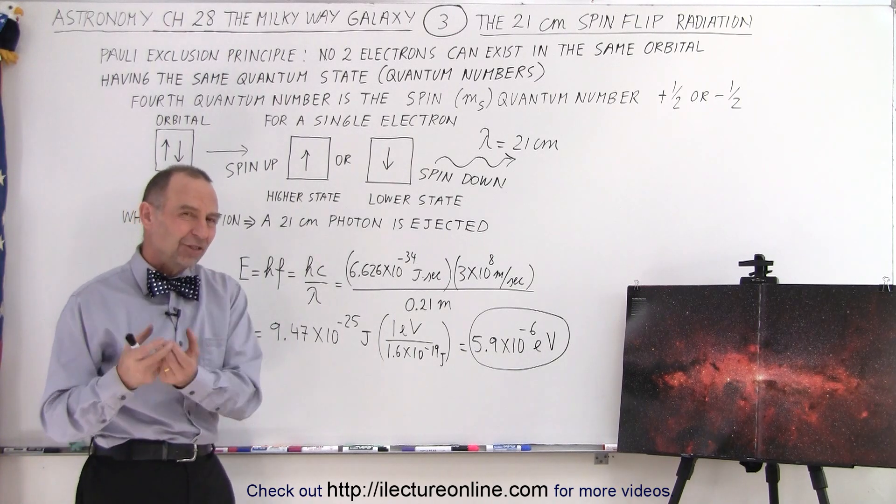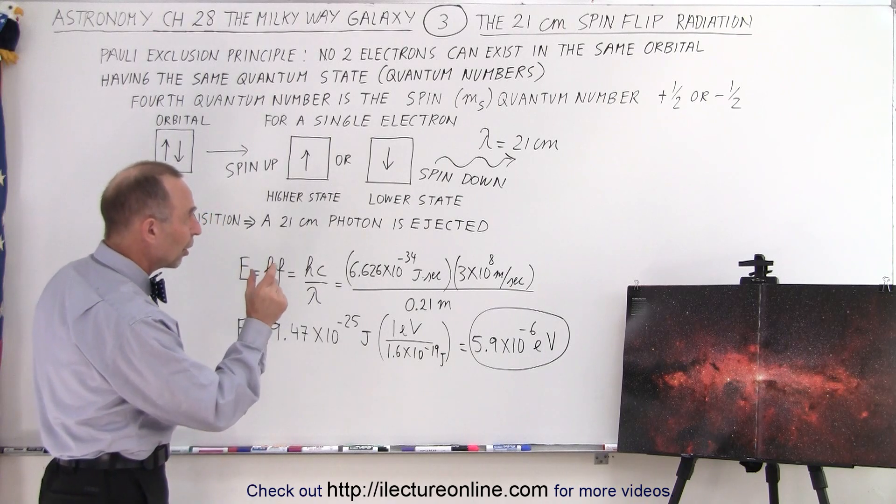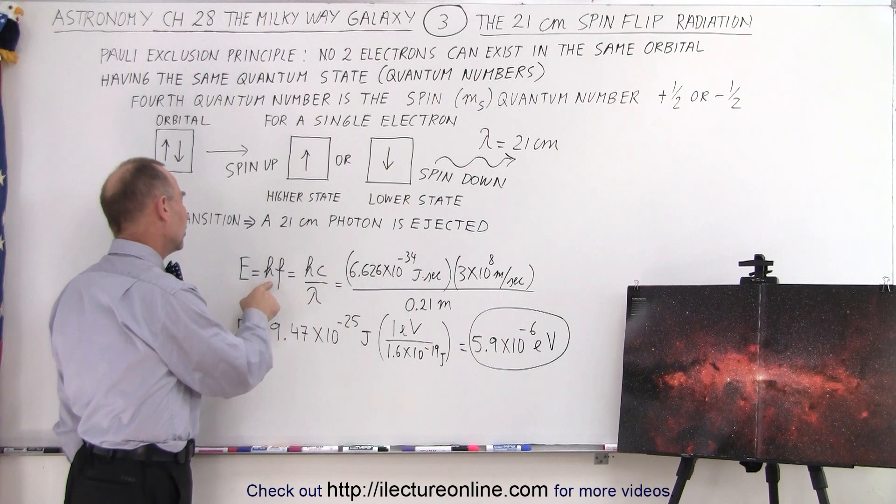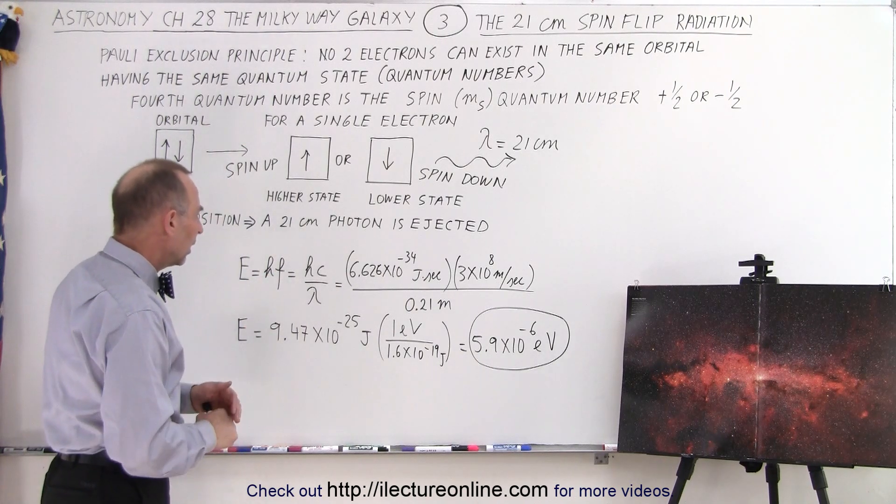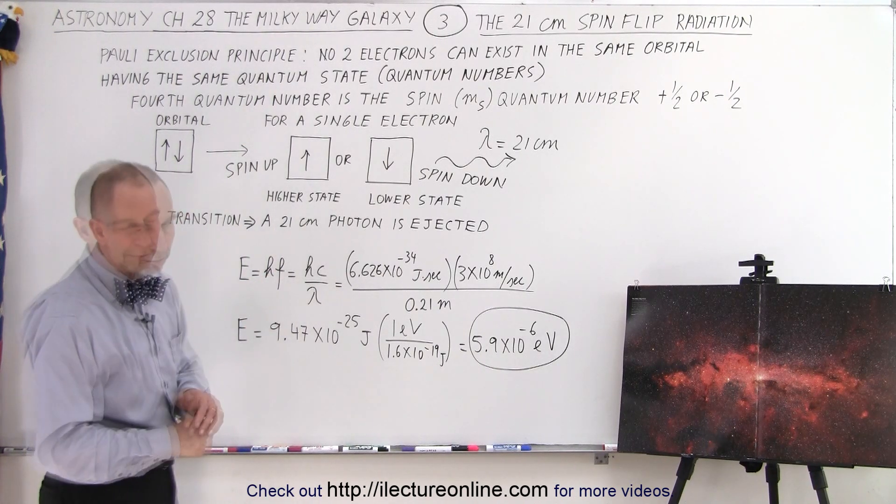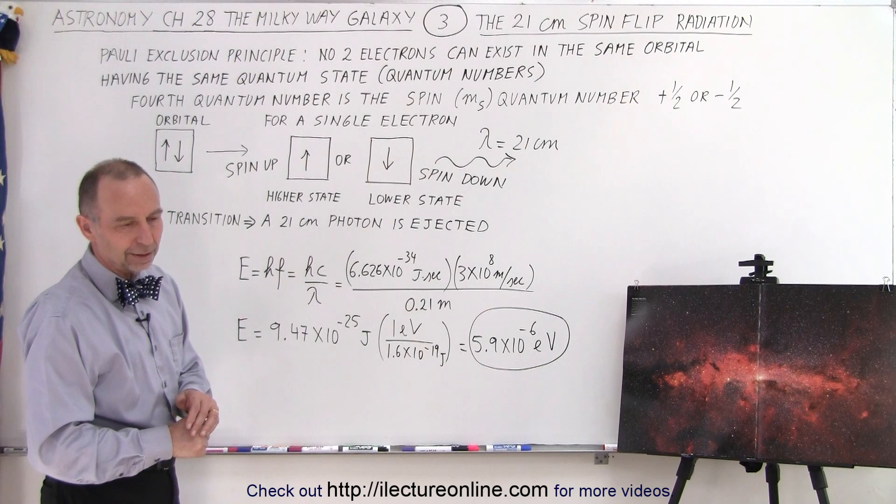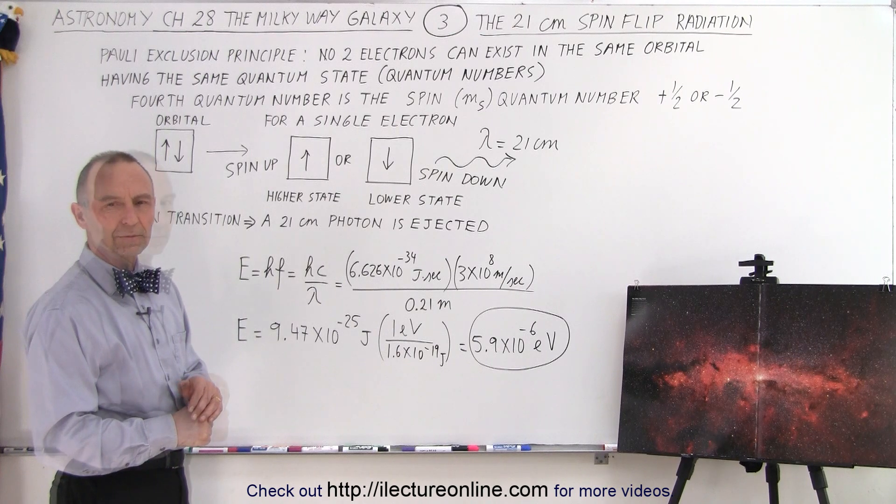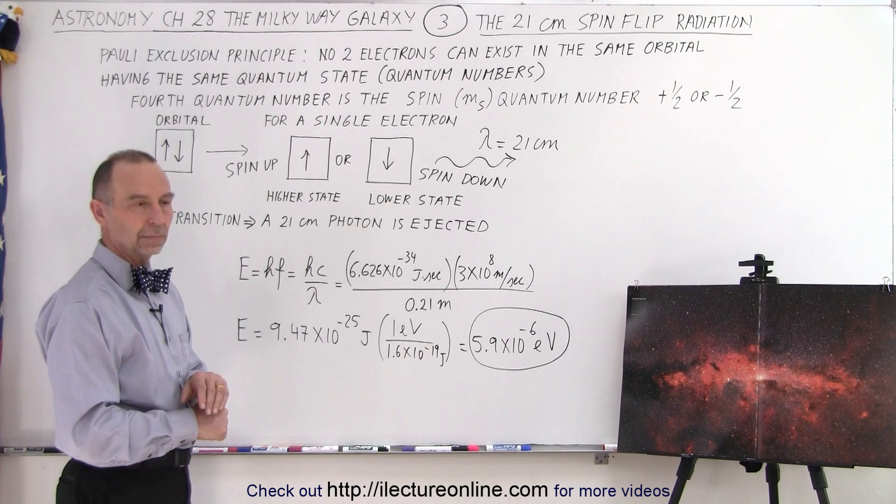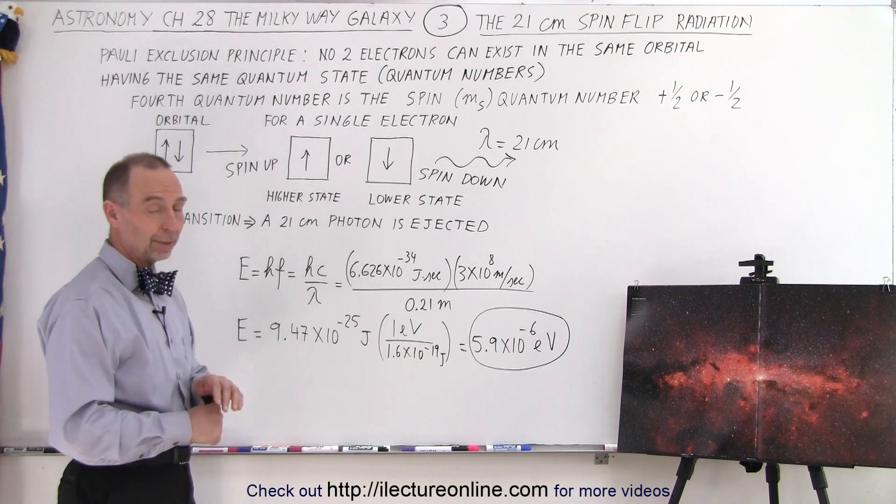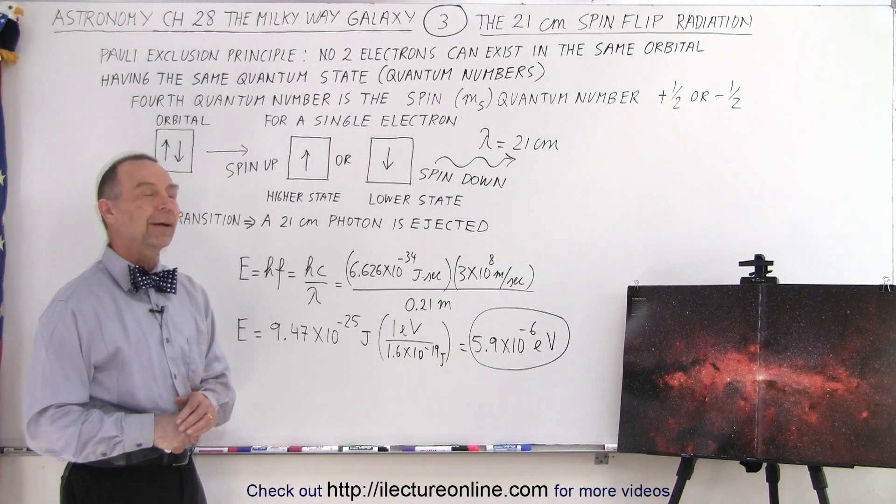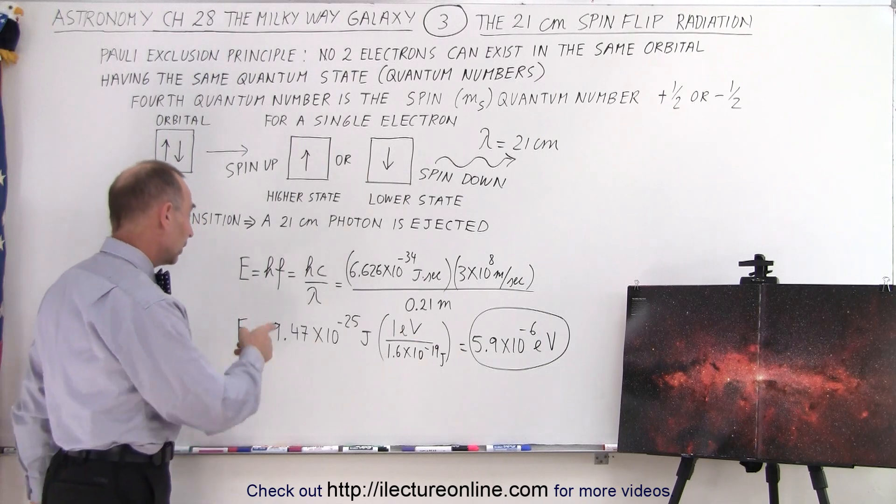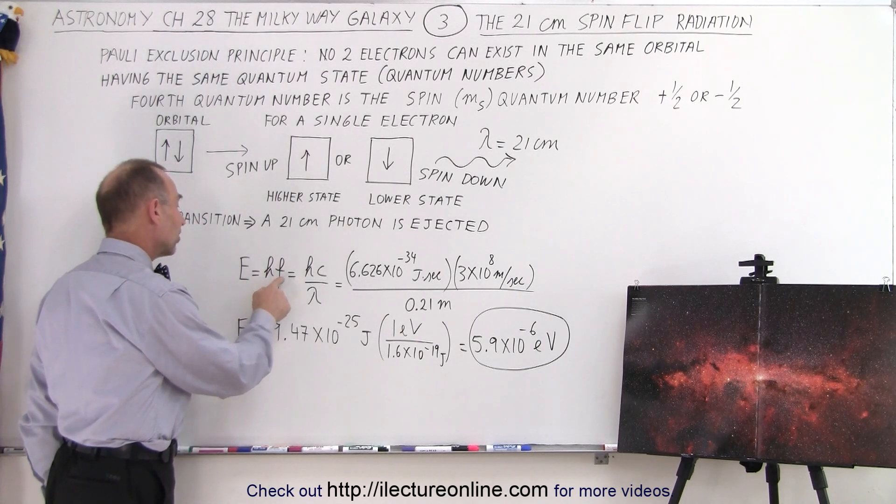If you want to know how much energy that is, a photon that contains a wavelength of 21 centimeters, well, we can use the equation E equals H times F.